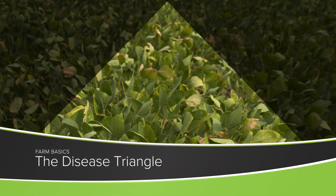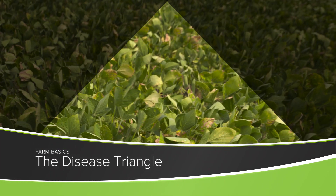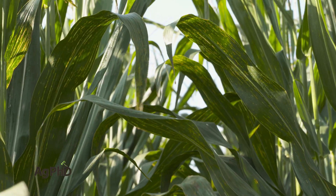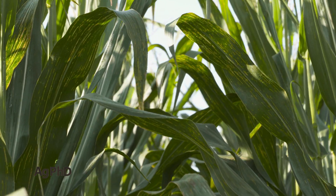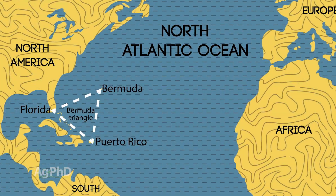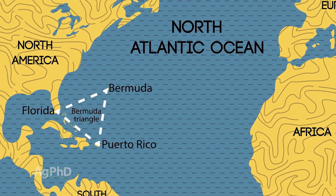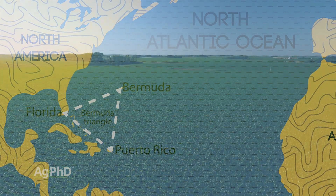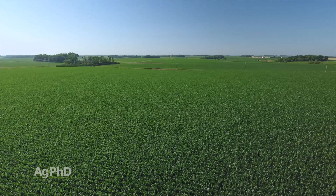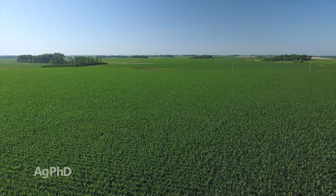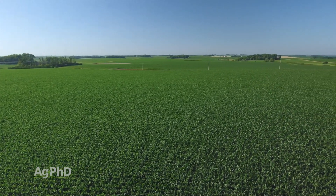During our Farm Basics time today, we're going to talk a little about the disease triangle. Some people would say that must be out in my field — I've got this spot that always gets disease problems. That's not what we're talking about. This isn't like the Bermuda Triangle or something of disease on your farm. This is three different things that are necessary for a disease to take hold in your crop.